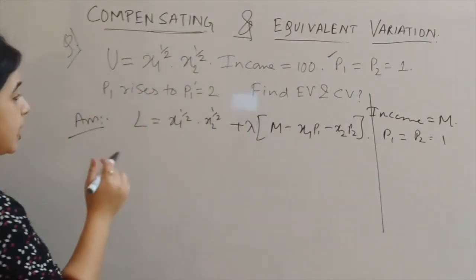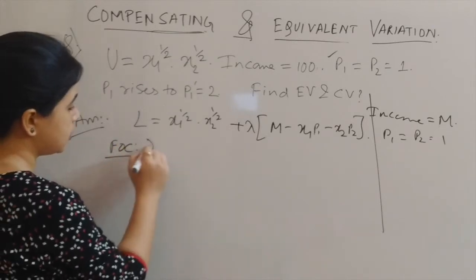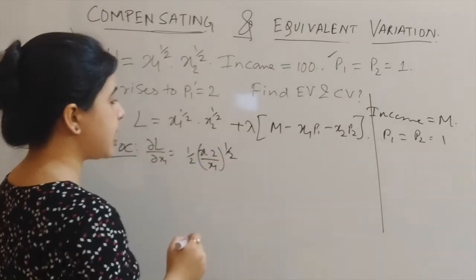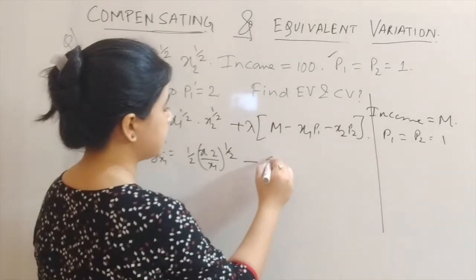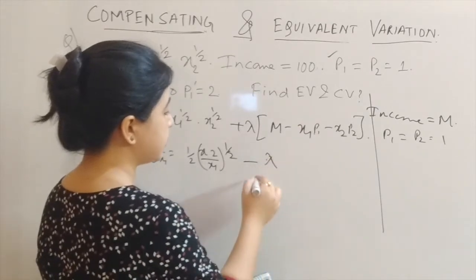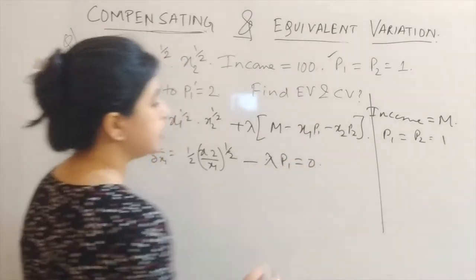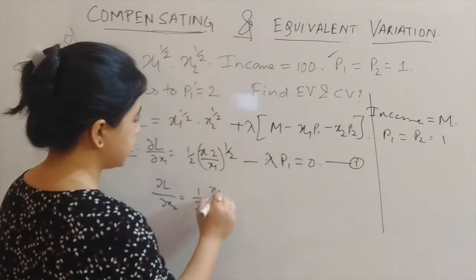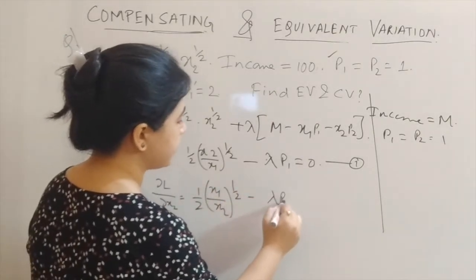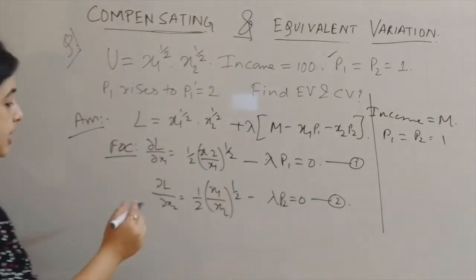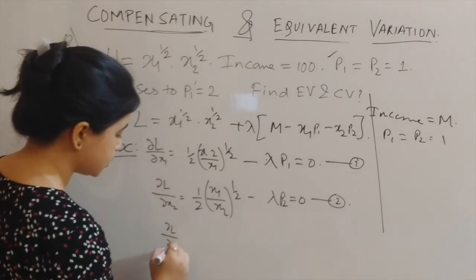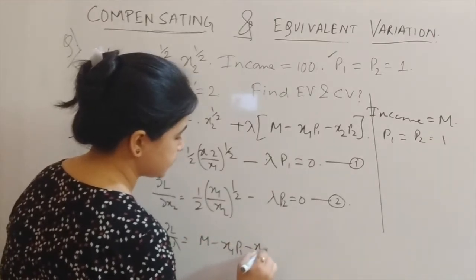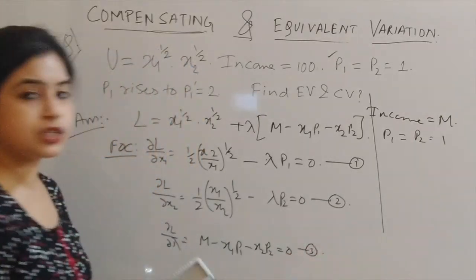Now the first order conditions. Del with respect to x1 gives half times (x2/x1) to the power half minus lambda·p1 equal to 0 — this is equation 1. The second FOC gives half times (x1/x2) to the power half minus lambda·p2 equal to 0 — this is equation 2. The third FOC with respect to the Lagrangian multiplier gives the budget constraint — this is equation 3.